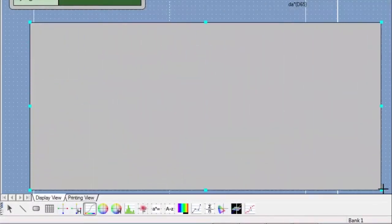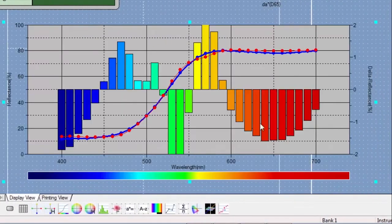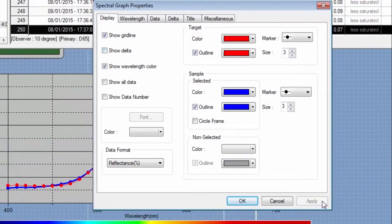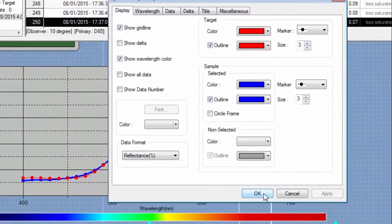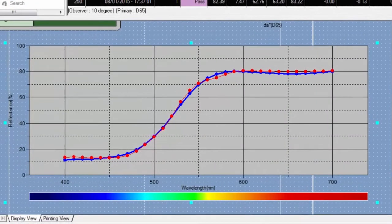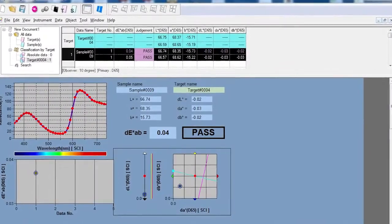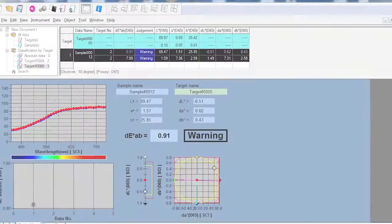Immediately begin analysis with predefined templates or customize your own. Design screen and print layouts that meet your quality control needs. Reports vary by application from simple pass-fail assessments to trend charts, histograms, color plots and spectral graphs.